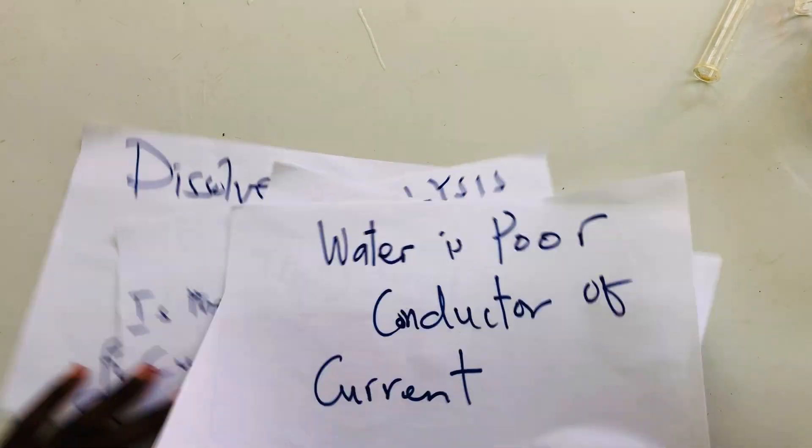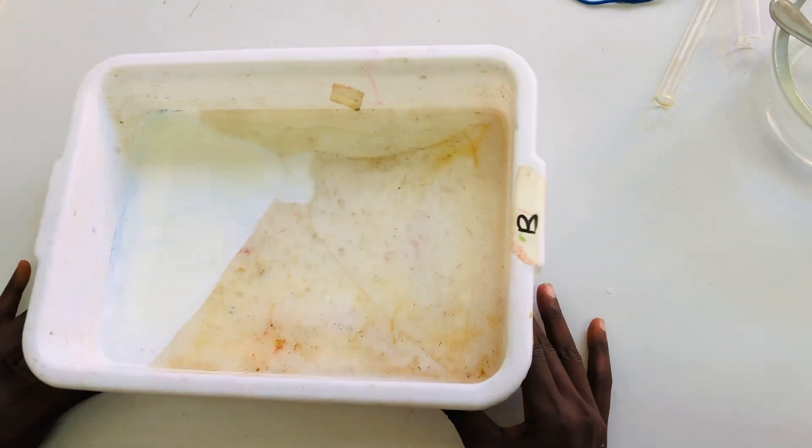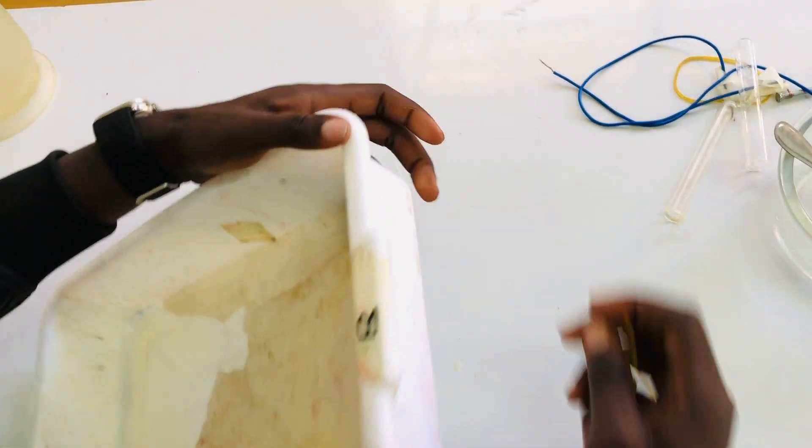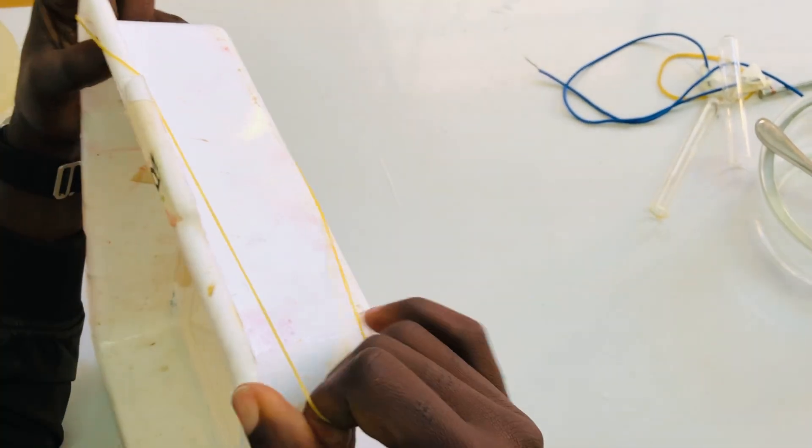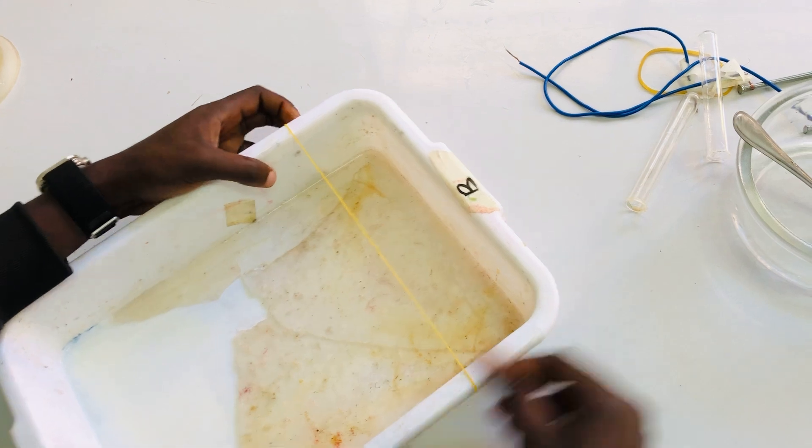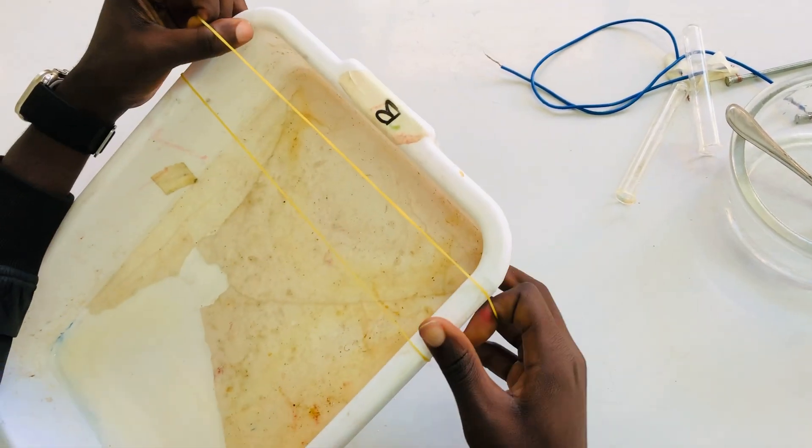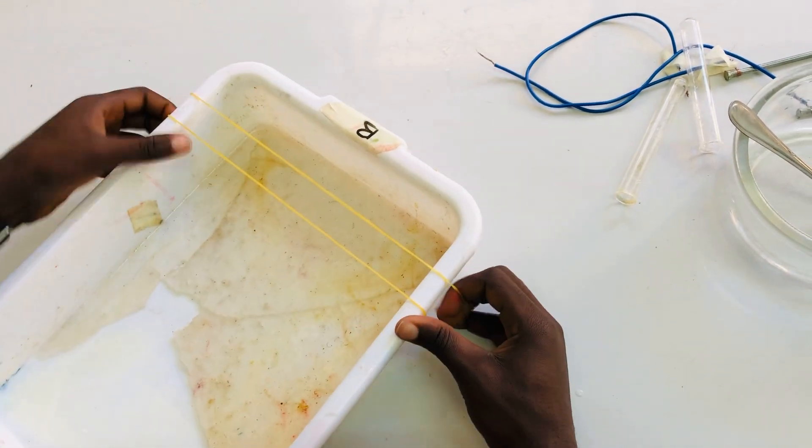This is a setup for electrolysis of water. You have to take this apparatus which will act as an electrolyte cell, a special apparatus where electrolysis is going to take place. In this video we are going to see how we can obtain oxygen gas and hydrogen gas in the laboratory.